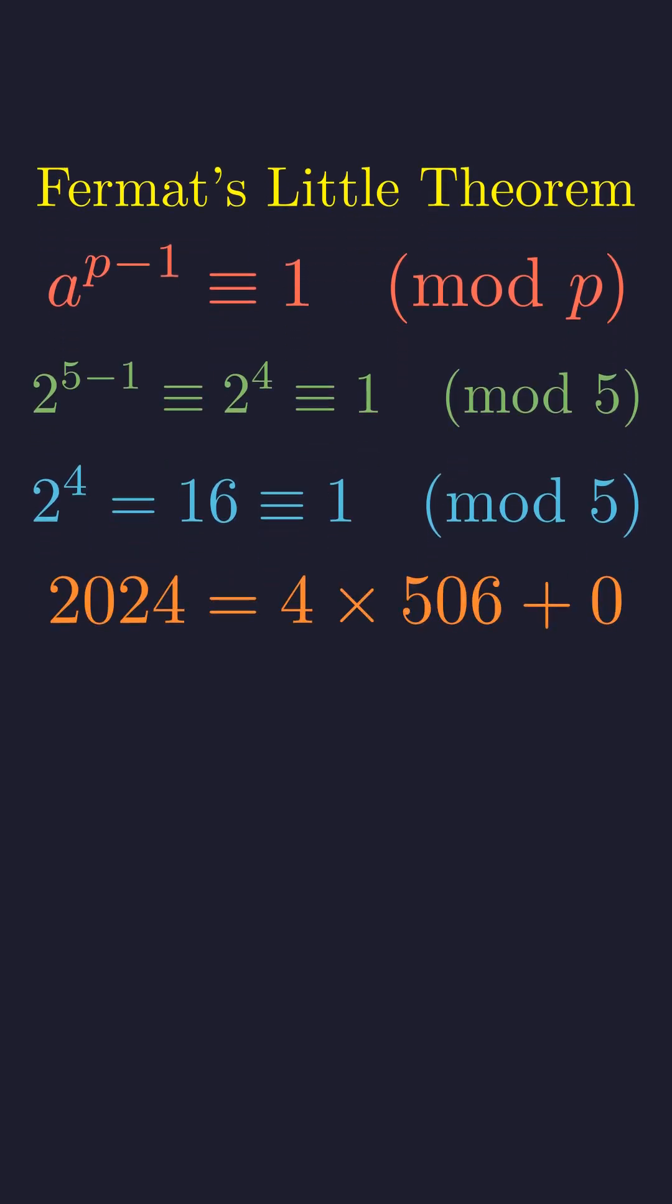Since powers of 2 repeat every 4 steps modulo 5, we need to see where 2024 lands in this cycle. Dividing by 4 gives us exactly 506, with no remainder.